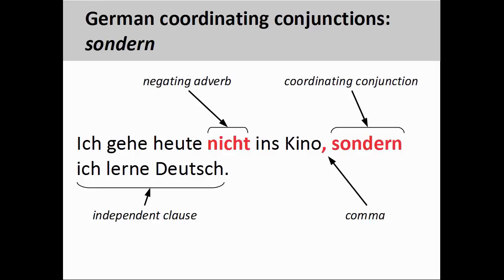Finally, it is important to note that there is a difference between 'aber' and 'sondern.' Although both could be translated as 'but' into English, 'sondern' has the additional meaning of 'rather,' 'instead,' and 'on the contrary.' The coordinating conjunction 'sondern' is used to provide contrasting and corrective information in the second clause, and can only be used when a negative element — such as 'nicht' (not), 'nie' (never), or 'kein' (no) — is contained in the first clause. For example, the sentence 'Ich gehe heute nicht ins Kino, sondern ich lerne Deutsch' — 'I'm not going to the movies today, rather I'm learning German' — contains two independent clauses joined by 'sondern.' The first clause contains the adverb 'nicht,' which negates the activity of the subject going to the movies, and the second clause provides contrasting corrective information explaining that the subject will instead be studying German.